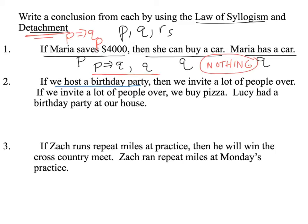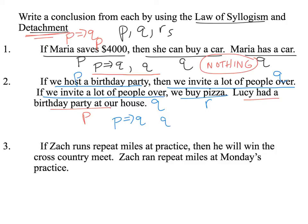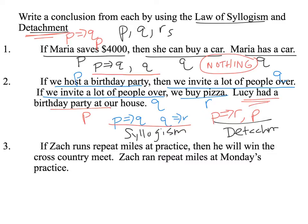The next one: if we host a birthday party (P), then we invite a lot of people over (Q). If we invite a lot of people over (Q), then we buy pizza (R). Lucy had a birthday party — that's P. We have P implies Q and Q implies R, so by the law of syllogism, P implies R. Combined with P being true, by the law of detachment, the conclusion is: we buy pizza.